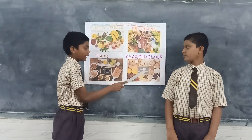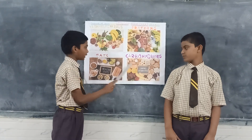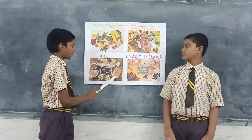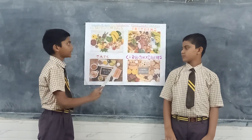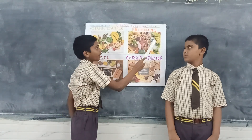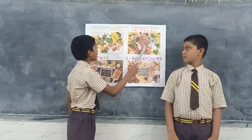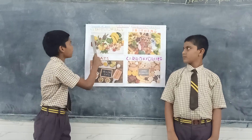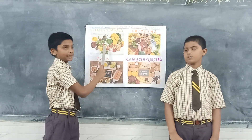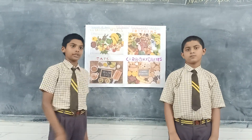Examples of carbohydrates: bread. Examples of fats: meat and eggs. Examples of proteins: fish and meat. Examples of vitamins and minerals: vegetables and fruits.